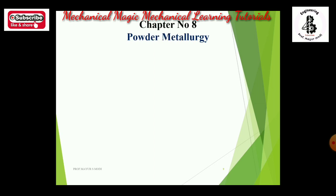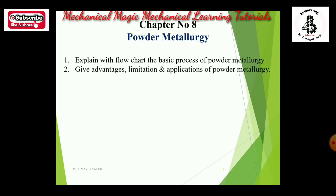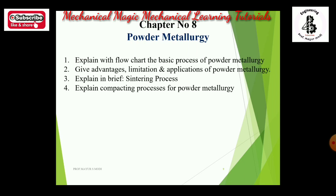Chapter 8 is powder metallurgy. Topics include: explain with a flow chart the basic process of powder metallurgy for 4 marks; most important for 7 marks — give advantages, limitations, and applications of powder metallurgy; explain the sintering process of powder metallurgy for 4 marks; explain the compacting process for powder metallurgy for 7 marks; and different powder-making processes for 7 marks. Minimum 7 marks theory from powder metallurgy.